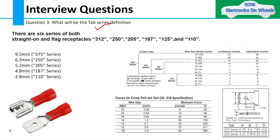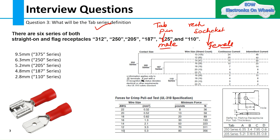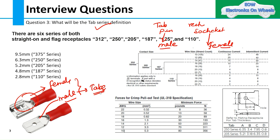In tab series definition, there are two types of terminals: tab and receptacle — pin and circuit. In layman's terms, one is male and the other is female. You can see here — this is my female terminal and this is my male terminal. So tab is nothing but the male terminal.